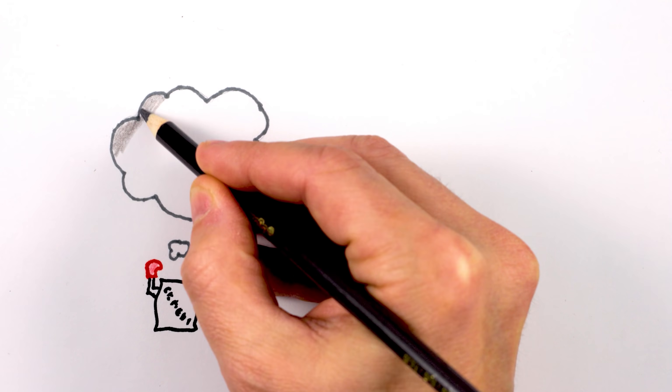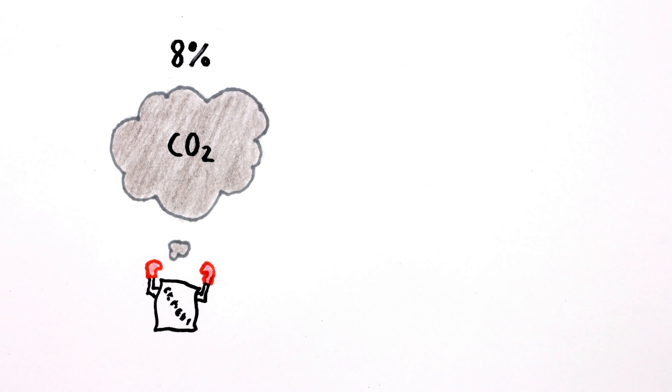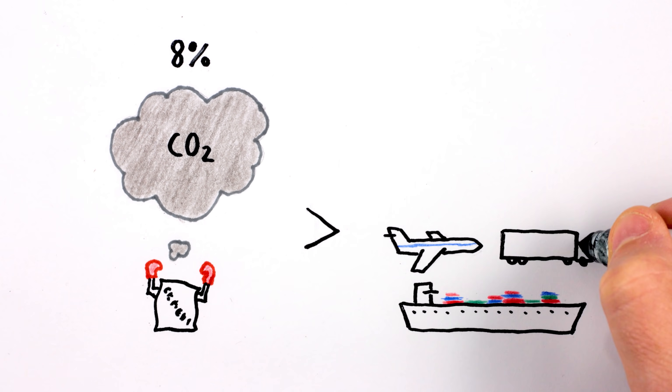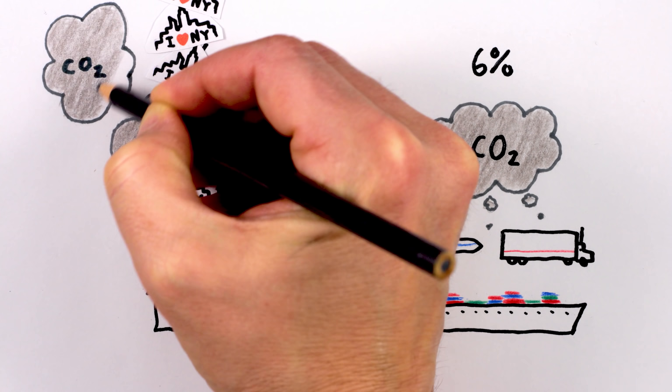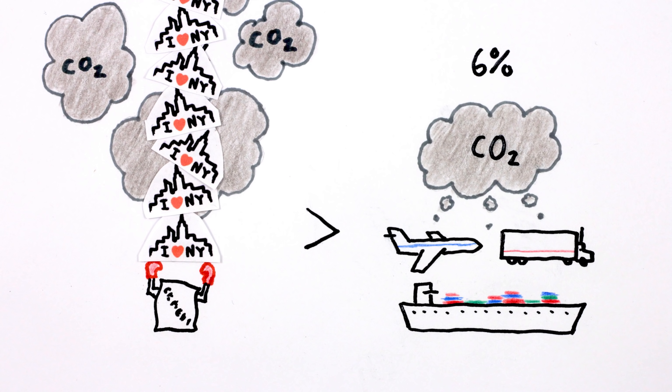Today, cement's double whammy leaves it responsible for 8% of humanity's carbon dioxide emissions. That's more than airplanes, ships, and long-distance trucking put together. And as we keep on building a new New York City each month, the emissions from cement are only going to go up.